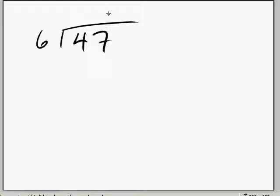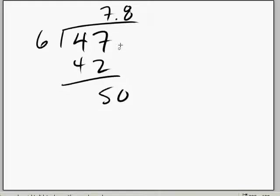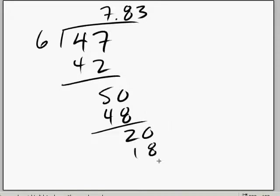Six into 47. Well, seven goes in very nicely, 42. Put a period there. Bring down the zero to make 50. Six into 50, 7.8. Six, eight times six is 48, which is 2. Zero. And then I'll continue going down to zero.